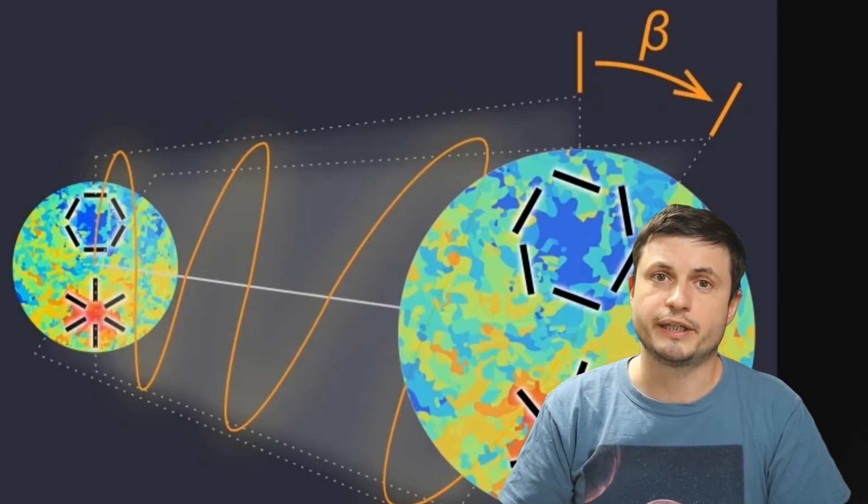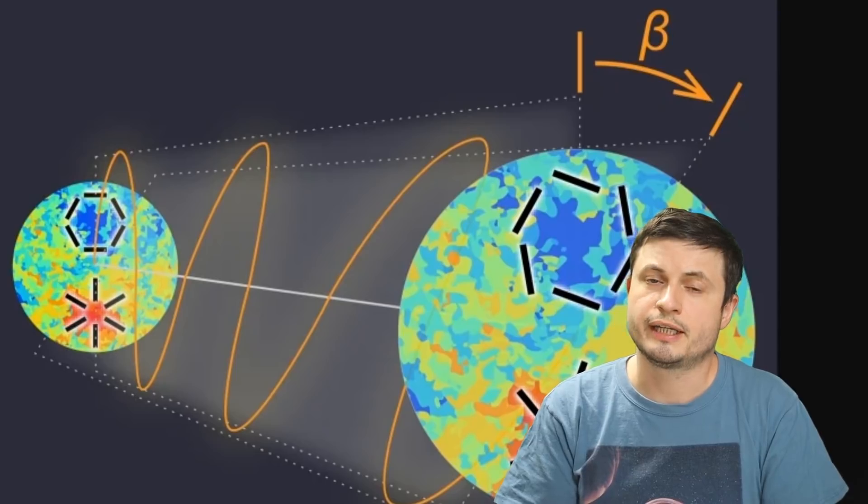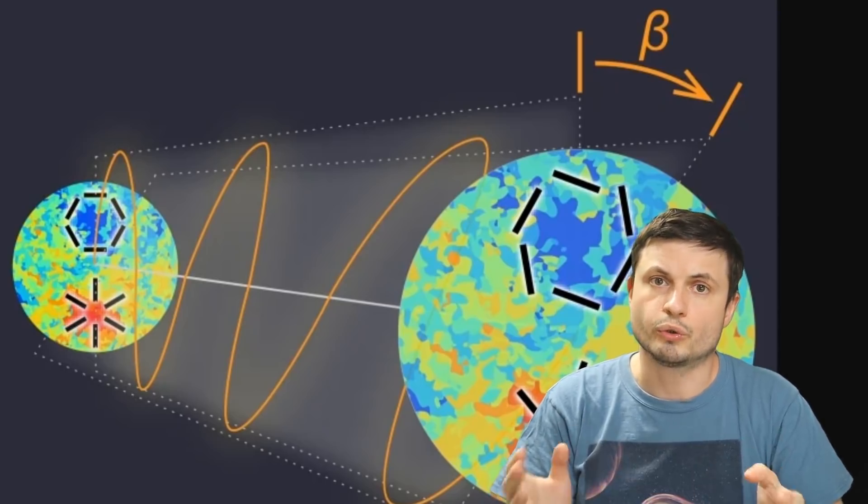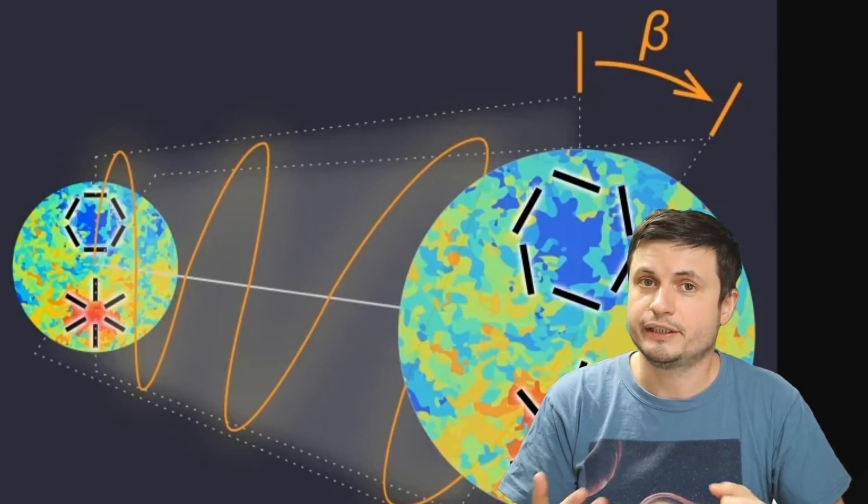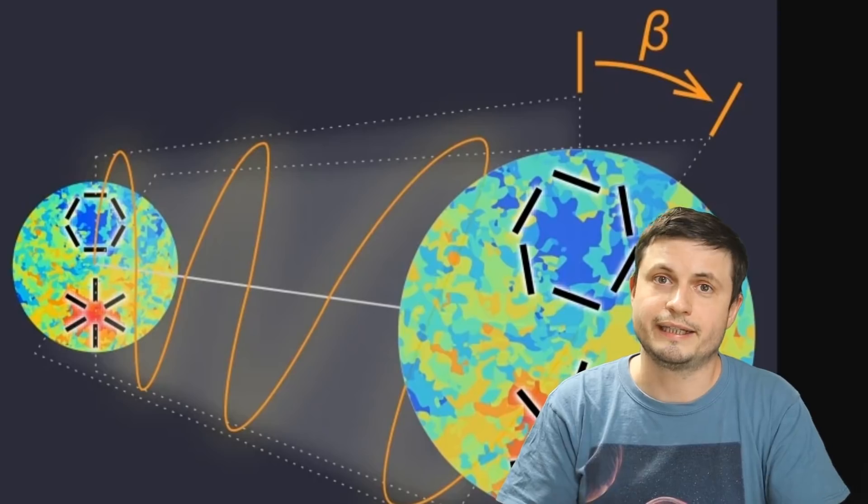And what their initial study suggests is that there's about 99.2% chance that overall the CMB light is indeed twisted for some unknown reason, not just parts of it, the entire thing.